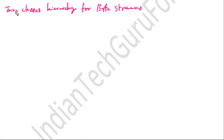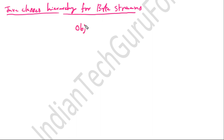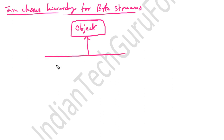As we all know, in Java the ultimate superclass for all classes is the Object class. The classes that are needed for byte streams are derived from the Object class. For both input as well as output purposes, two streams are derived from the Object class.